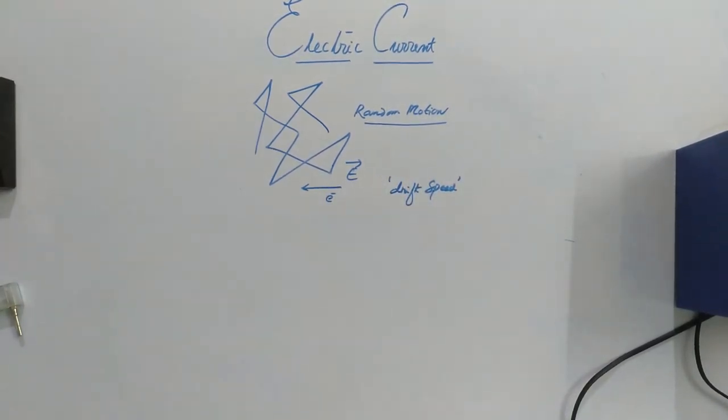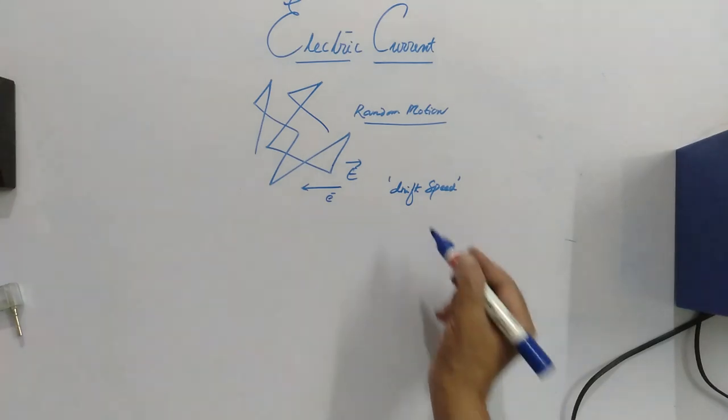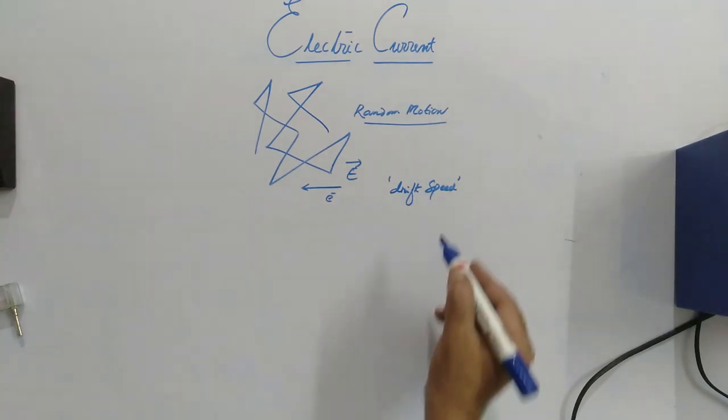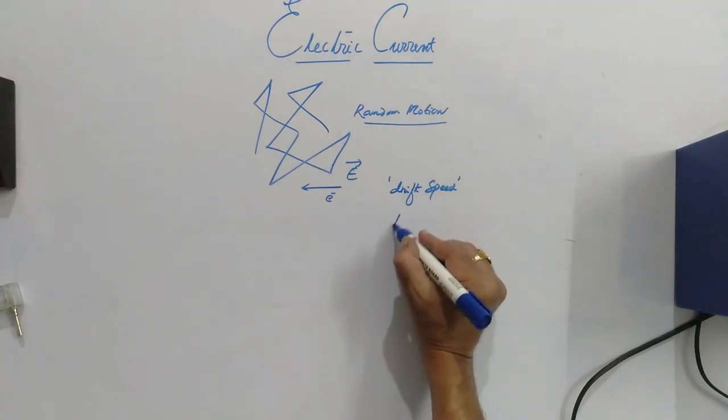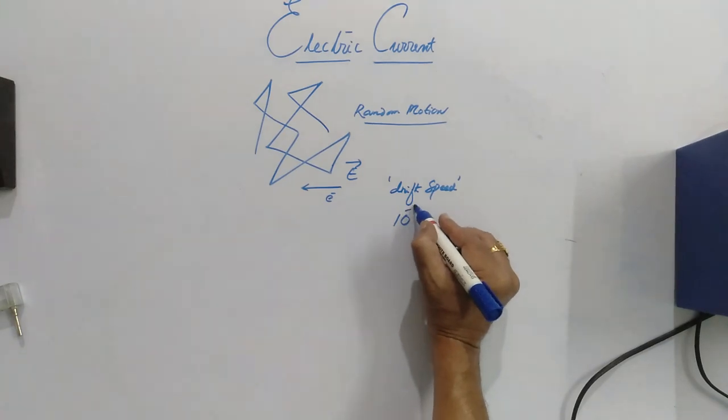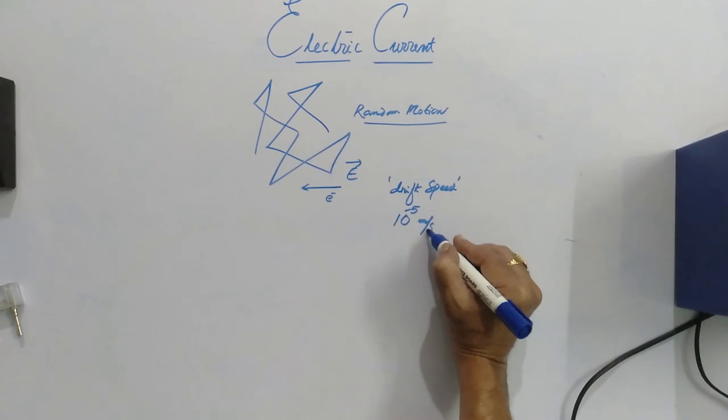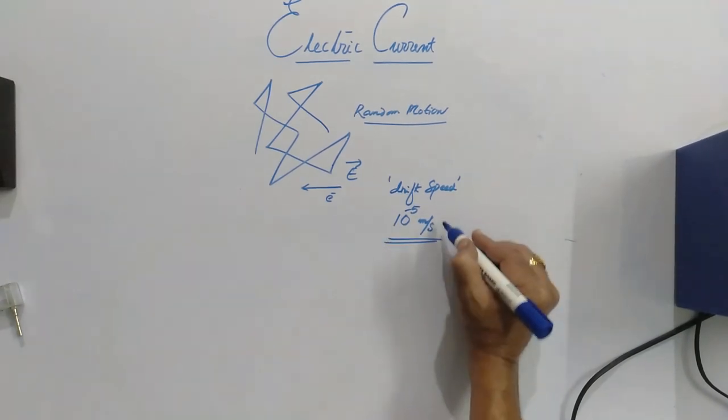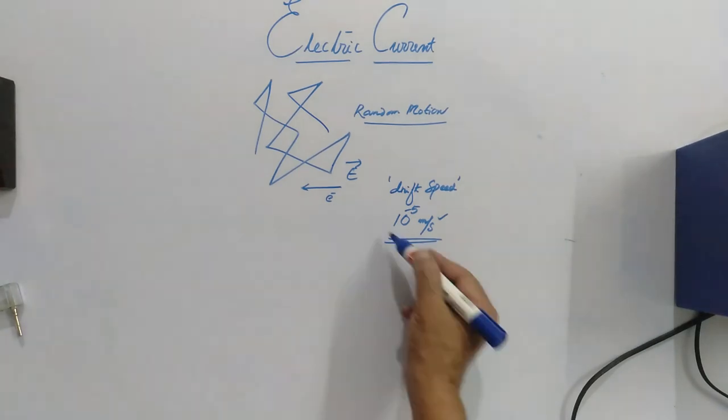What is drift speed? When, or in the presence of electric field, the electrons will move in the opposite direction of electric field. This speed that electrons gain in the opposite direction of electric field is only known as drift speed. The drift speed is of the order of 10 to the power of minus 5 to 10 to the power of minus 6 meter per second. That means it is very small magnitude.